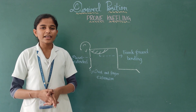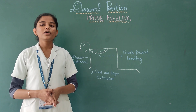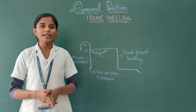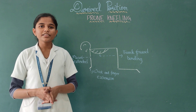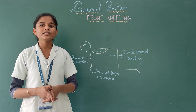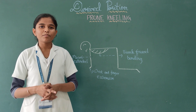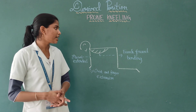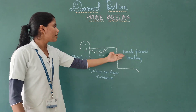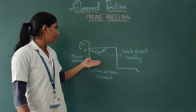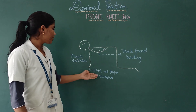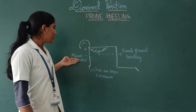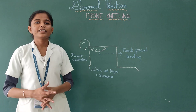Uses in exercise therapy: to perform mat activities, to perform coordination exercises, cat-camel exercises, movements — trunk forward bending, bristle finger extension, elbow extended.